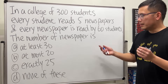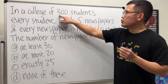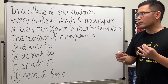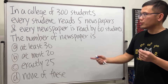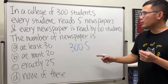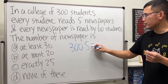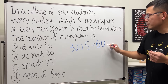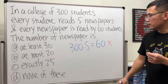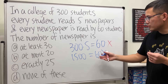We have these options and I'm going to show you a twist — two ways to do it. The first way is the algebra way. We see that we have 300 students and each student reads five newspapers, so we have to find out the total amount of readings involved — just multiply them: 300 times 5. Then, every newspaper is read by 60 students, so we have 60 times the number of newspapers x. Now we can solve this equation. Divide both sides by 60.